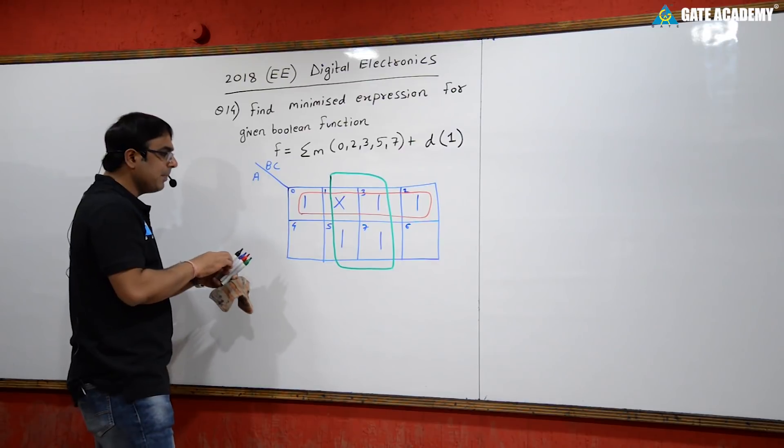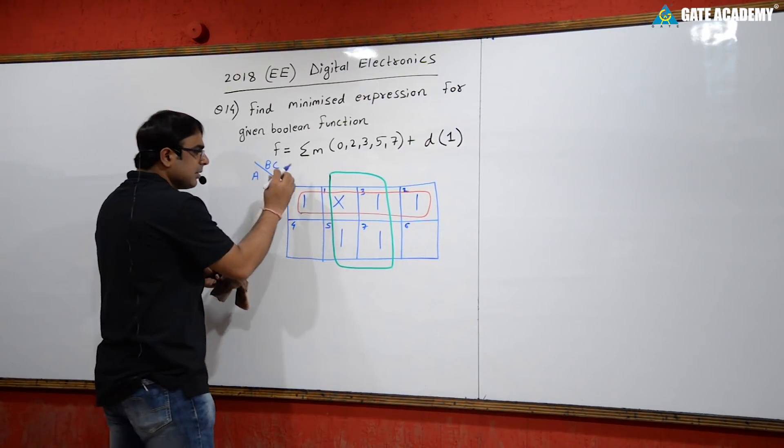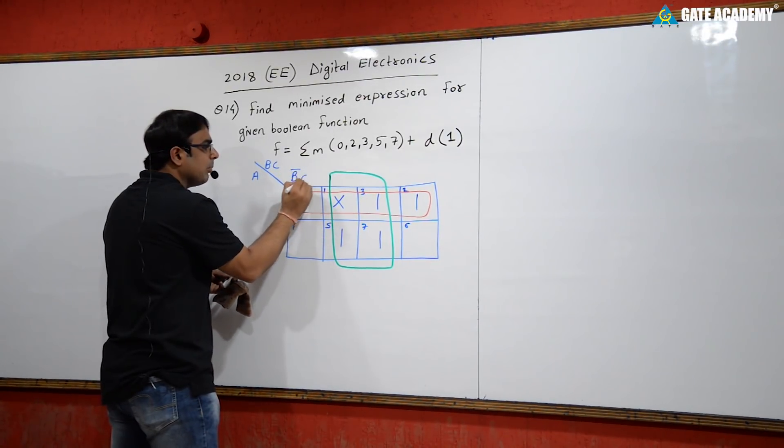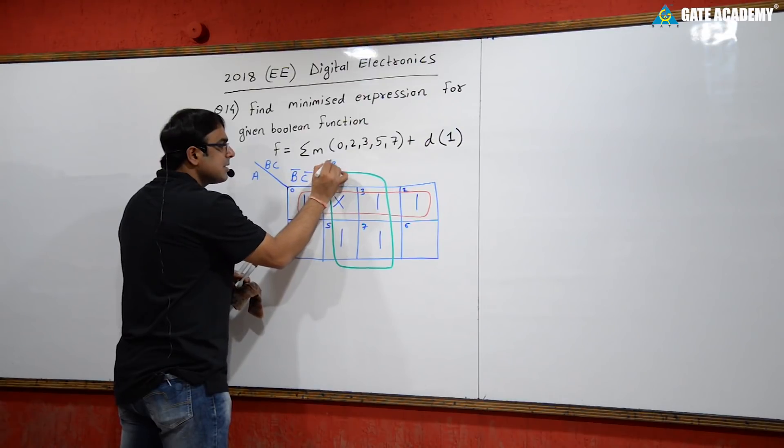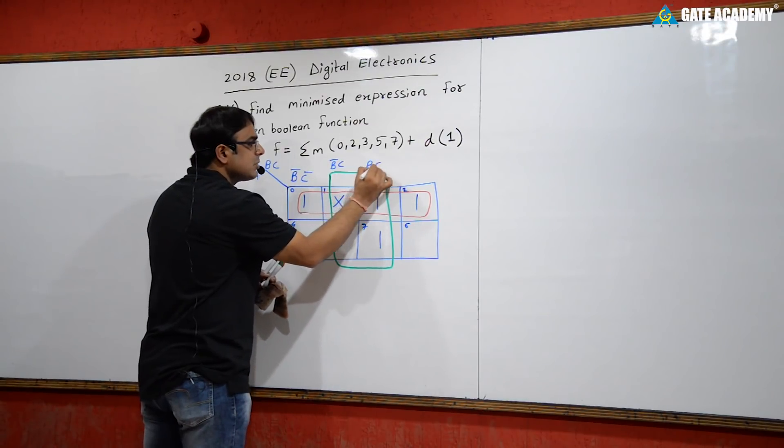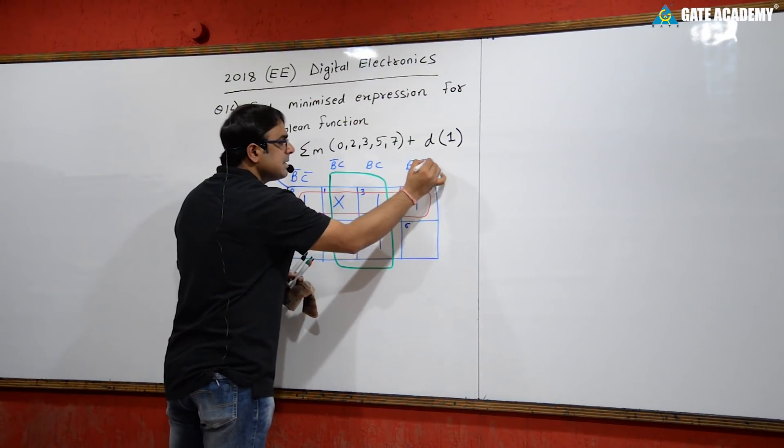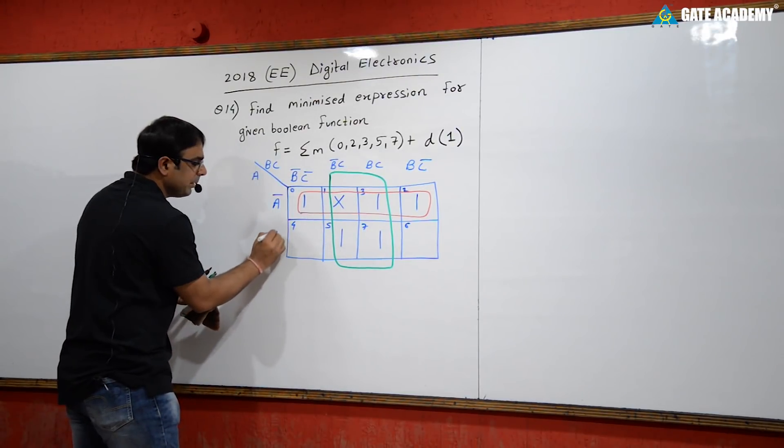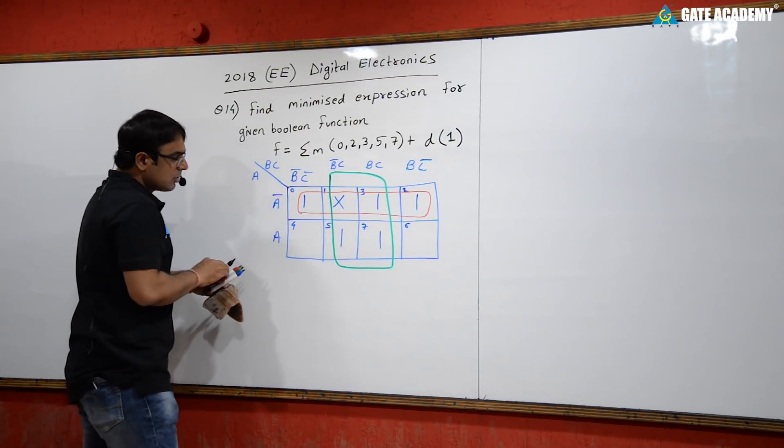We can label the terms: b complement c complement, b complement c, bc, and bc complement. This row is a complement and this is a.